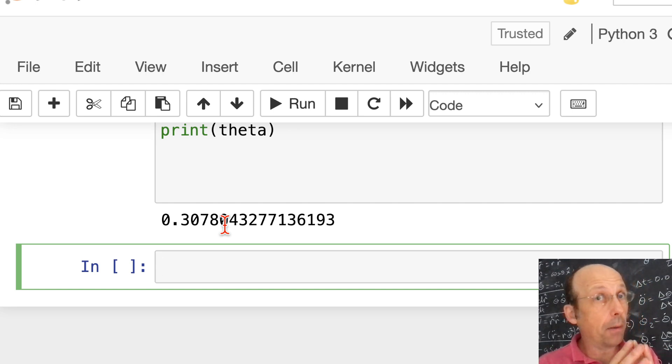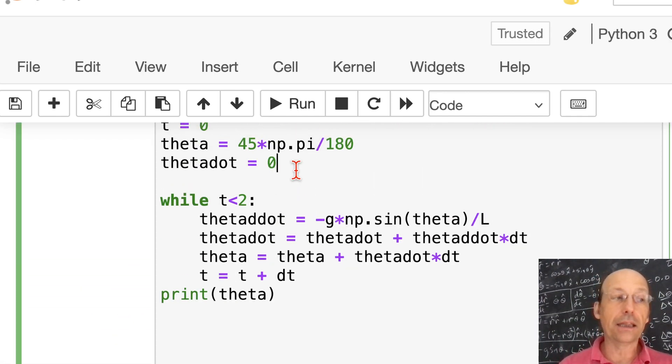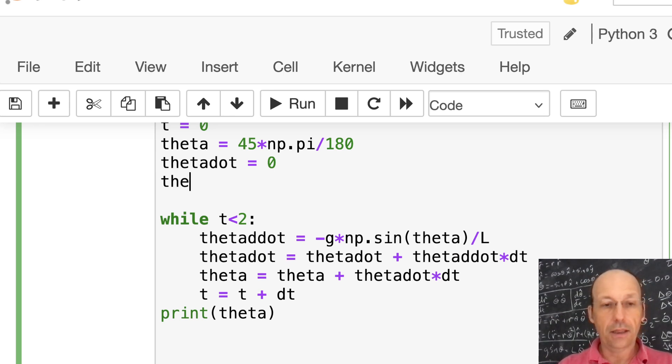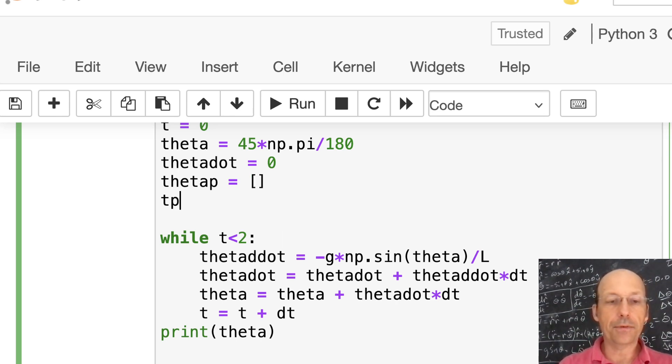Now I'm going to use that to update theta. Update theta dot. Theta dot equals theta dot plus theta double dot times dt. Exactly what I did before. And then theta equals theta plus theta dot times dt. And then update time. t equals t plus dt. Now let's just print theta. So we can see if it works. And I'm going to run this. And there you go. It did it. Final angle theta. I don't even know if that's right.